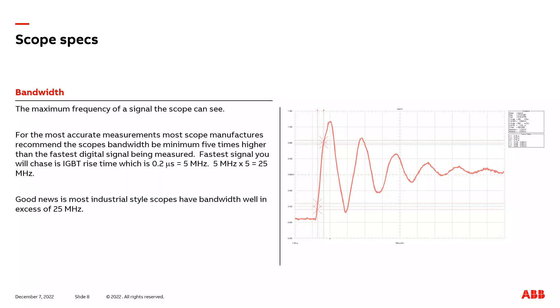The fastest event on a VFD that you will be attempting to measure with the scope is going to be the IGBT rise time, which is two microseconds, which converts to five megahertz. If you take five megahertz times five, you get to 25 megahertz. So your scope has to have a minimum bandwidth of 25 megahertz. Well, the good news in the marketplace today, almost all scopes have a bandwidth well in excess of 25 megahertz, many of them into the hundreds of megahertz. So you shouldn't have too hard of a time finding a scope that meets the bandwidth requirement.